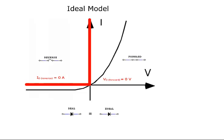The simplest of these linear models is called the ideal diode model. It behaves like an open switch for a reverse bias diode and like a closed switch for a forward bias diode.